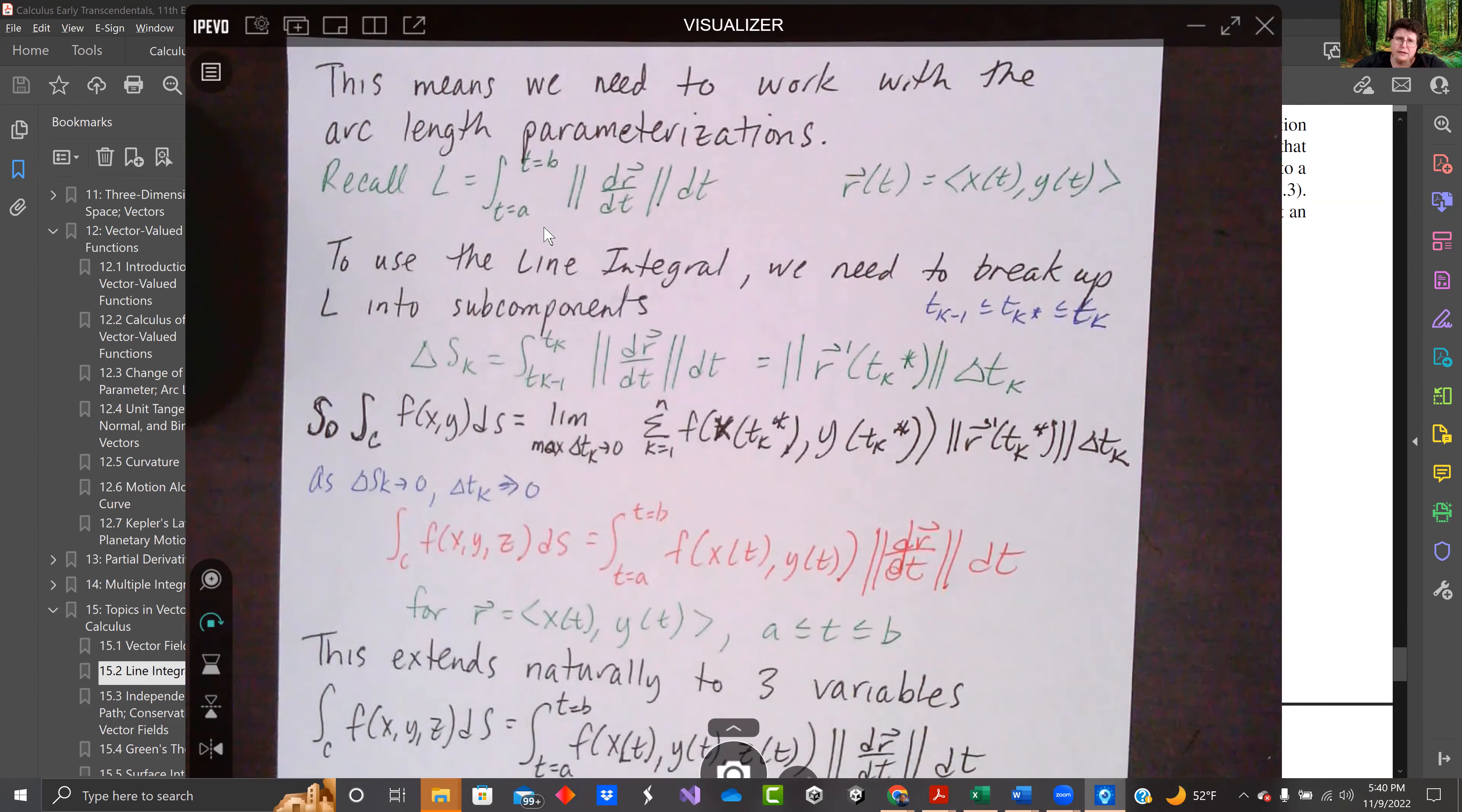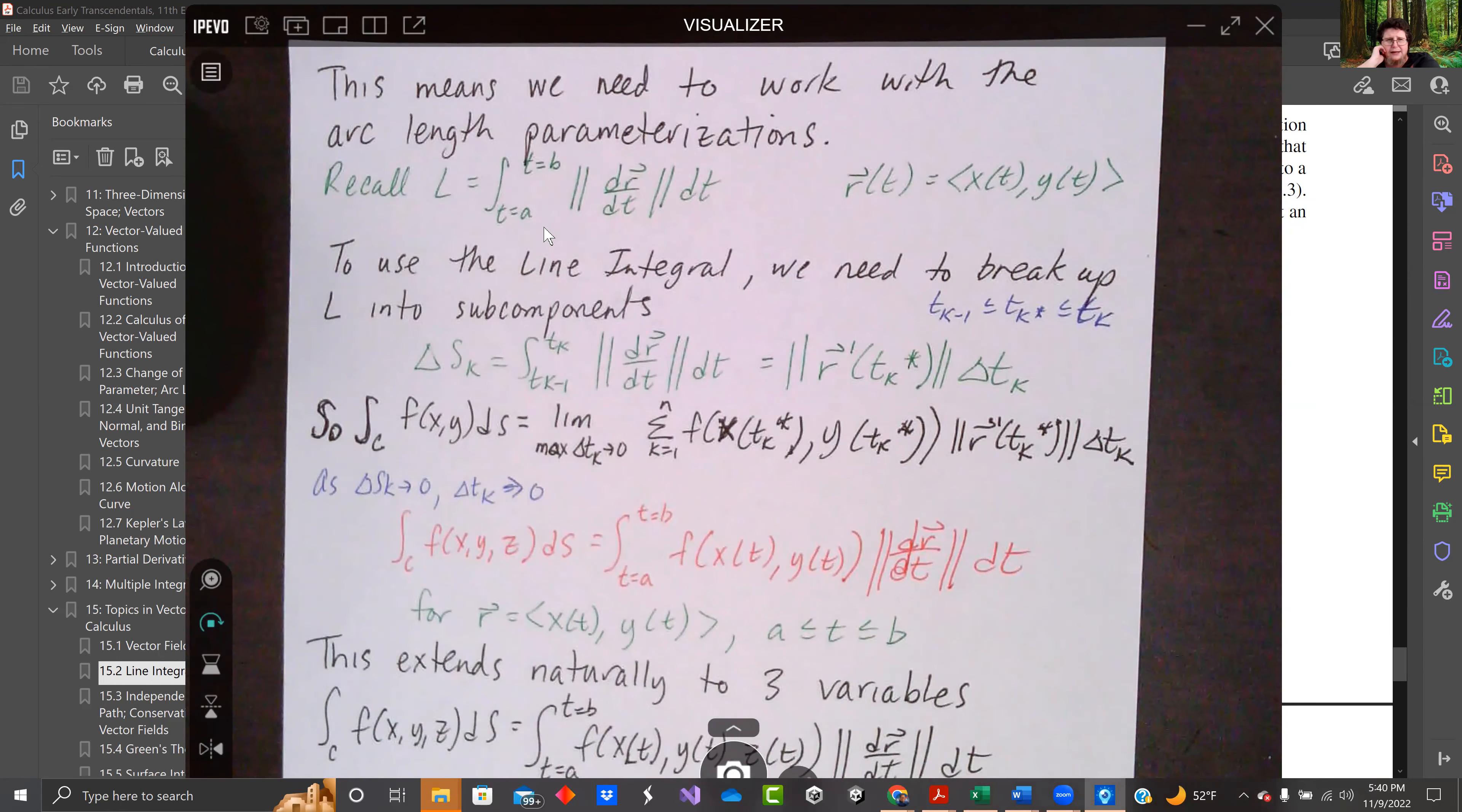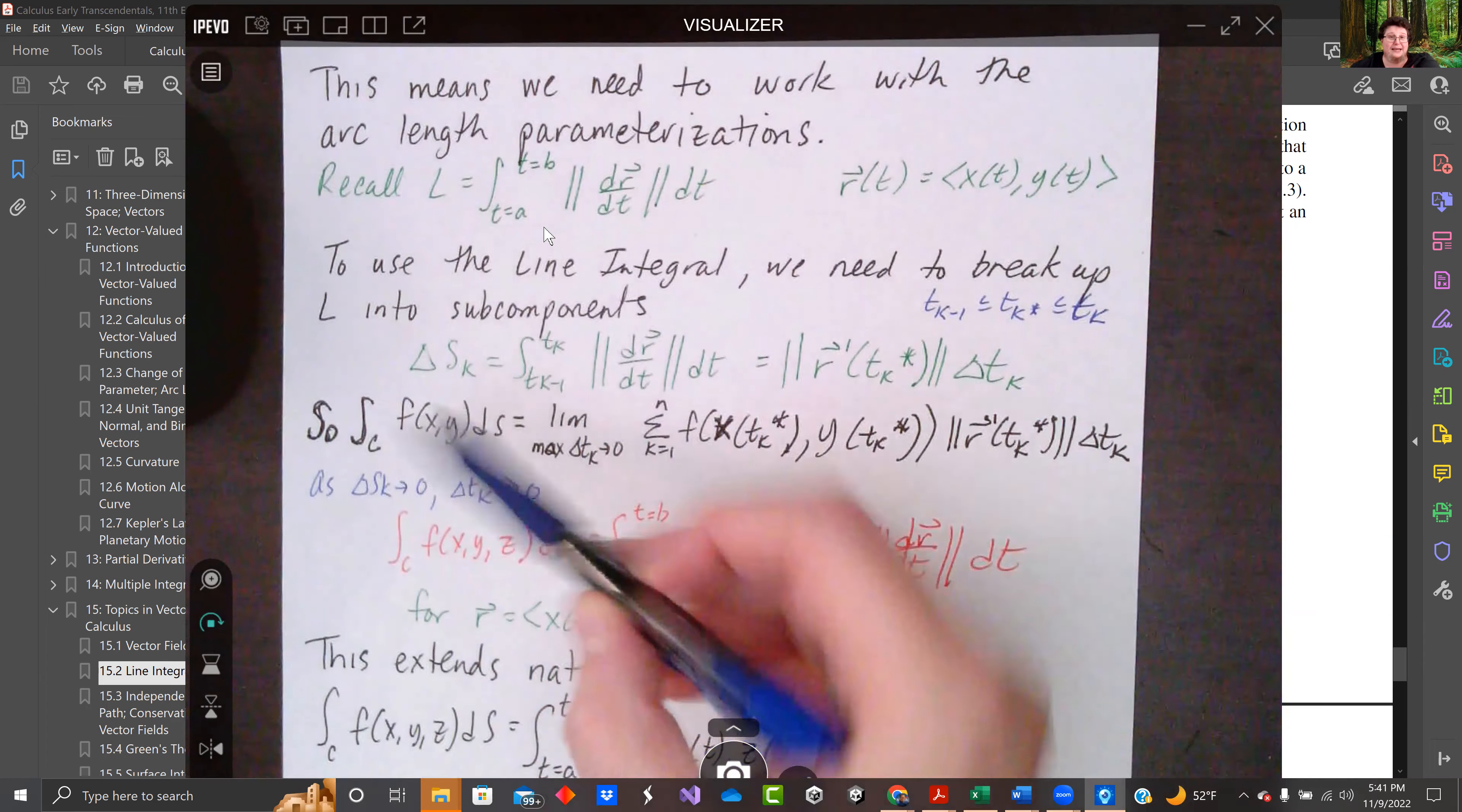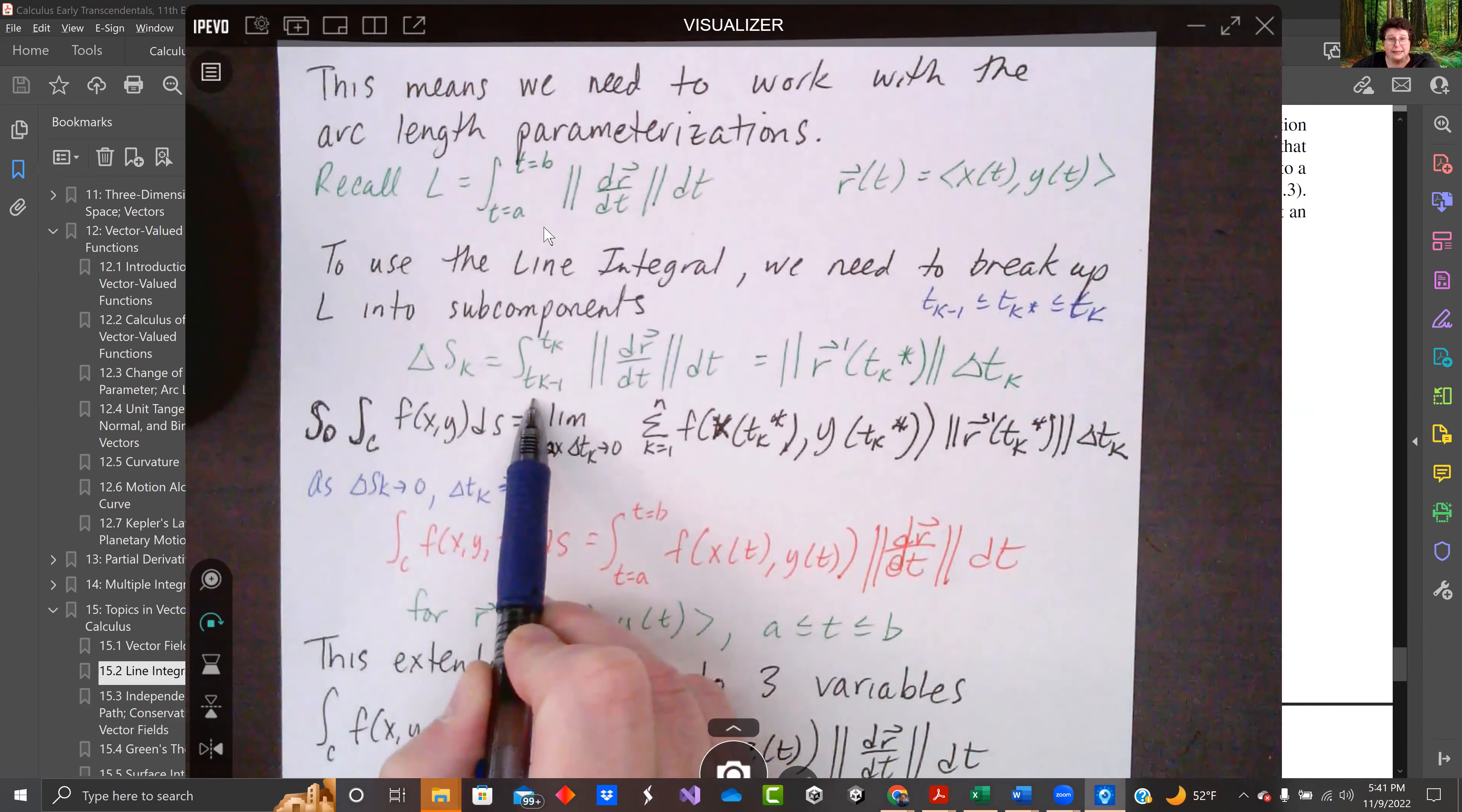Recall we did this. You have the length from time equals a to time equals b, dr dt dt, where r of t is x of t and y of t, or x, y, and z as we go into three dimensions. That's finding the length along the line integral. If we wanted to break it into sub components, each sub component would have that same kind of length set up. Each little line component has that same integral for its little tiny piece.